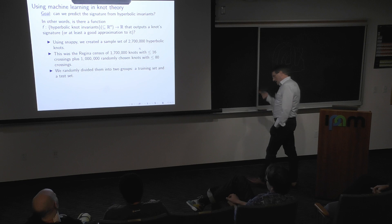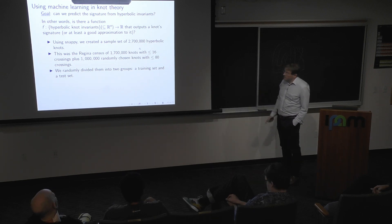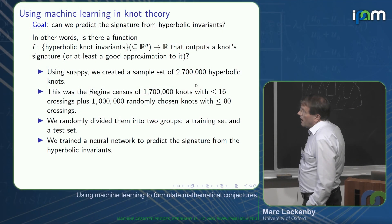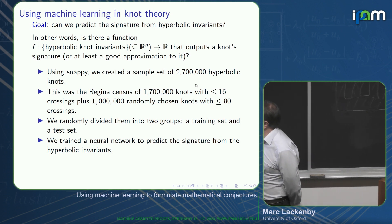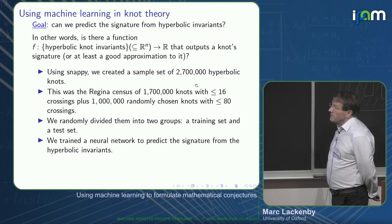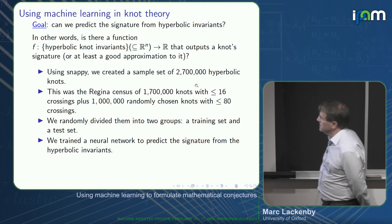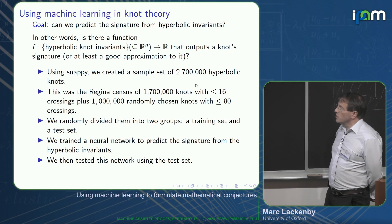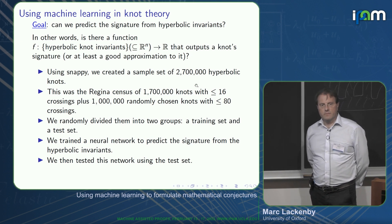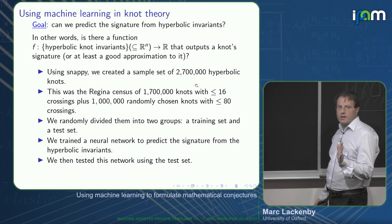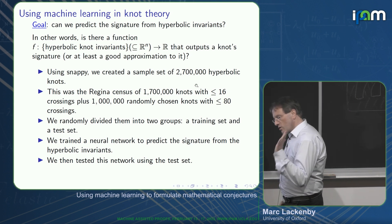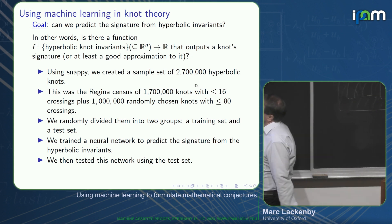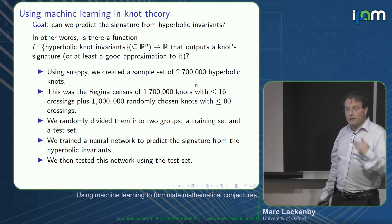You divide this randomly into a training set and a test set, train the neural network to try to predict the signature from the hyperbolic invariants, and then use the test set to see how well you've done. There's no guarantee this was going to work — no matter how clever your machine learning algorithms, if there is no connection between the signature and the hyperbolic invariants, this will give you garbage.